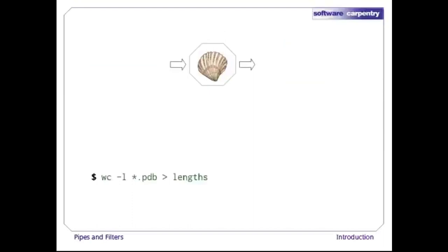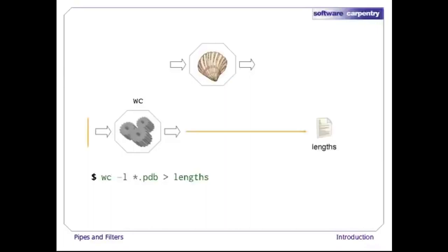For example, if we run 'wc -l *.pdb > lengths', the shell starts by telling the computer to create a new process to run the wc program. Since we've provided some file names as arguments, wc reads from them instead of standard input. And since we've used > to redirect output to a file, the shell connects the process's standard output to that file.